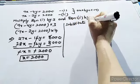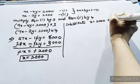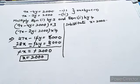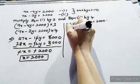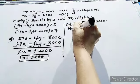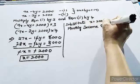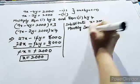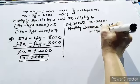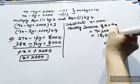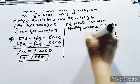substitute x equals 2000 in monthly income of A. So what is the monthly income of A? Monthly income of A is 9x. 9 into 2000 is 18000.